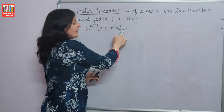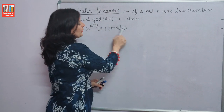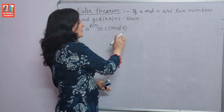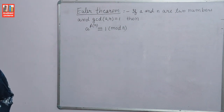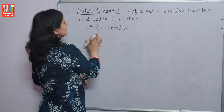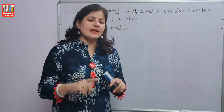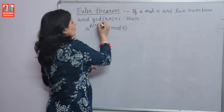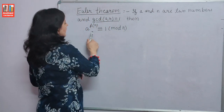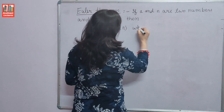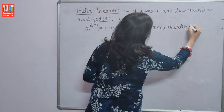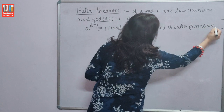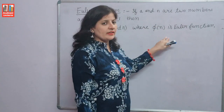In Fermat's theorem the condition was that N is a prime number — modulo P. But here there is no such condition. N can be composite or it can be a prime number. The condition here is that the GCD of the two numbers A and N should be 1. If GCD of both is 1, then we can use Euler's theorem, where phi(N) is the Euler function.